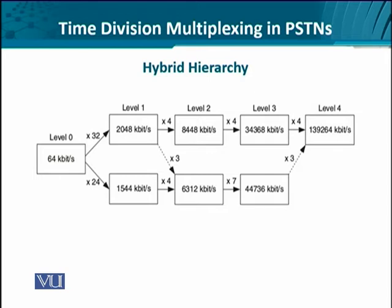There is a provision that from one hierarchy you can switch to the other. For instance, you can move from European level one and, using a multiplexing factor of three, translate it into the American digital hierarchy achieving 6.312 megabits per second. A reverse mapping also exists: at level three in the American digital hierarchy, using a multiplexing factor of three, you can achieve level four of the European digital hierarchy — which would otherwise be achieved using a multiplexing factor of four from level three of the European hierarchy.